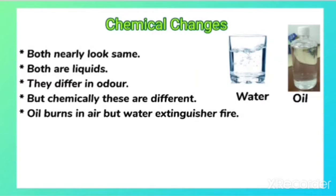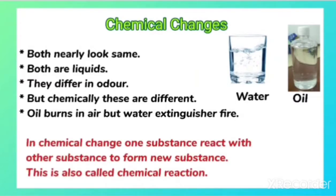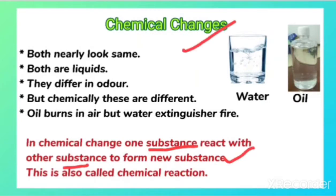In a chemical change, one substance reacts with another substance to form a new substance, and this is also called a chemical reaction. The change in which one substance reacts with another substance to form a new substance is called a chemical change. The very important point here is that a new substance is formed — that change is called a chemical change.